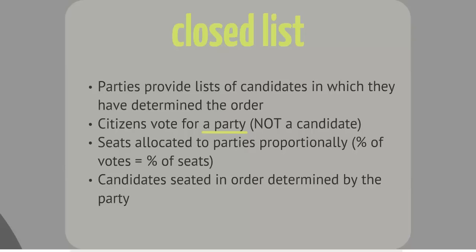Seats are allocated to the parties in proportion to the percentage of votes they won, but the specific candidates who get seated are determined by the order they appear on the party's list, as determined by the party leadership — not the voters. Thus, if party A wins 40% of the votes in a 10-seat district, that party gets 4 seats, allocated based upon the order of candidates determined by the party. These systems tend to give party leadership more control, and make being loyal to the party leadership pretty important. If you're a rebel within a party and you anger the leadership, they might put you at the 10th position in a 10-seat district, meaning you're not getting a seat.